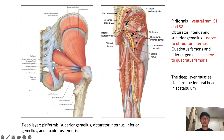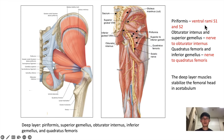Here we can see the nerve supply. We see the superior gluteal vein and artery that supplies the gluteus medius and maximus, and the piriformis muscle. Below the piriformis we have the inferior gluteal artery and vein that supplies the gluteus maximus, and here we see the sciatic nerve. As for the nerves of the deep hip region, the piriformis is supplied by the ventral rami of S1 and S2. The superior gemellus and obturator internus are supplied by the nerve to obturator internus. The inferior gemellus and the quadratus femoris are supplied by the nerve to quadratus femoris.